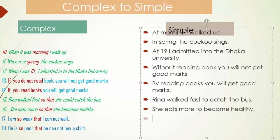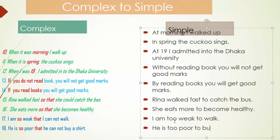When we find 'so + adjective + that', how can I change it to simple? 'I am so weak that I cannot work' becomes 'I am too weak to work.' We use 'too' instead of 'so' and 'to' instead of 'that'.